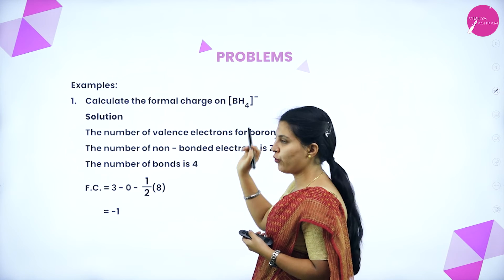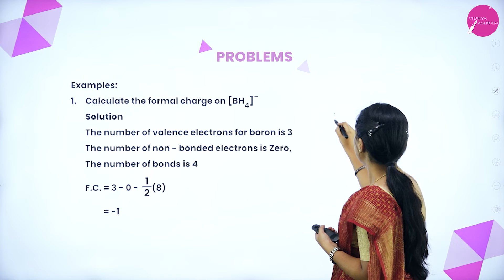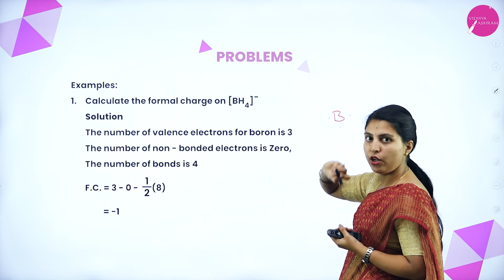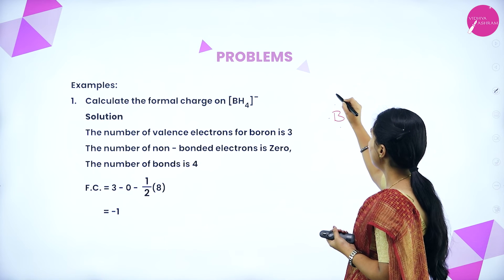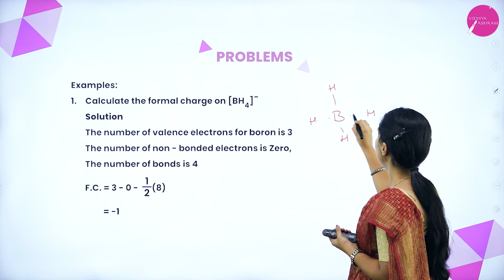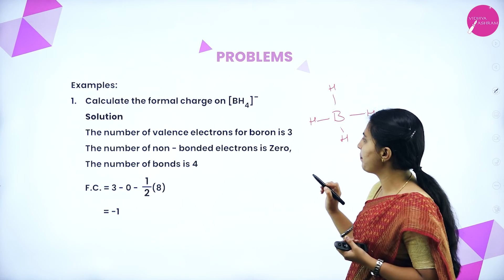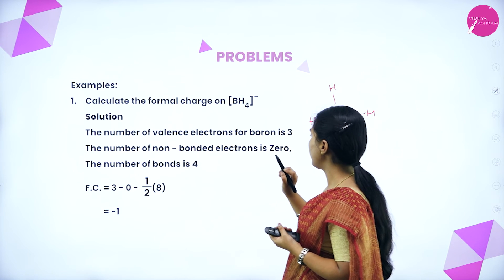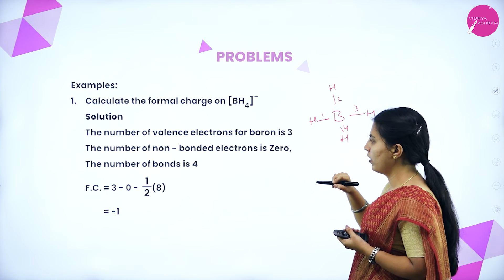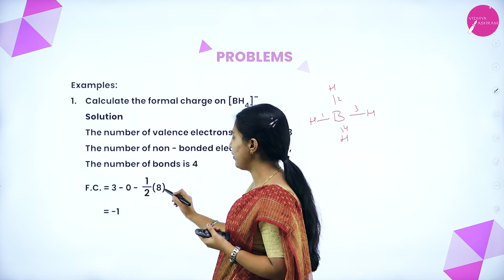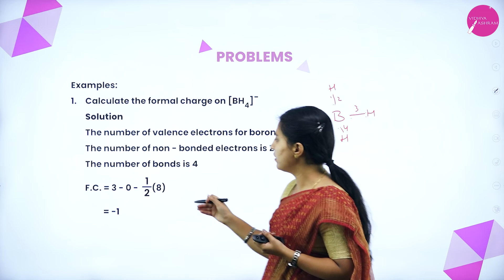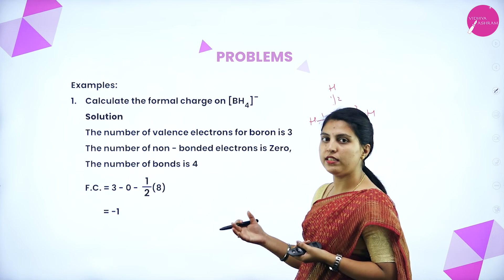Example: calculate the formal charge of BH₄⁻. Boron has 3 valence electrons; since there is a minus charge, one more electron is added. There are 4 hydrogen atoms with 1 valency each. The number of valence electrons for boron is 3, non-bonded electrons is 0, and number of bonds is 4. Formal charge = 3 − 0 − ½ × 8 = 3 − 4 = −1.